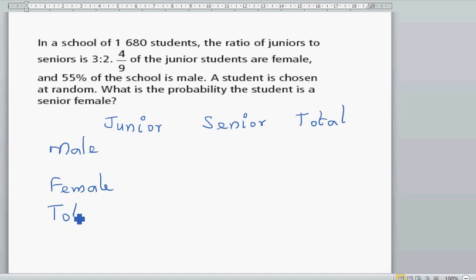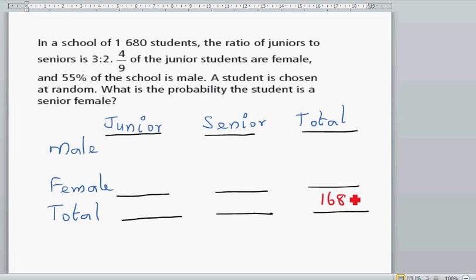Start from the total of the total. The total is 1,680. So the total of juniors is 3/5 of 1,680. Let me show the working. The junior is 1,680 times 3/5.